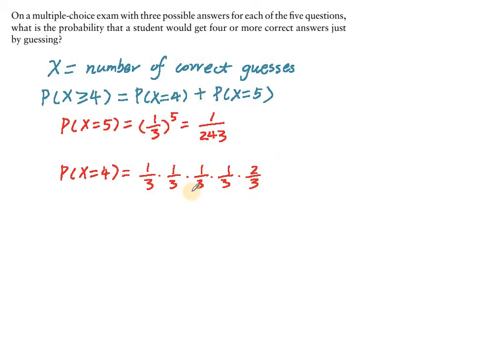However, this just corresponds to one way of getting four correct answers and one wrong answer. There are actually five choose one ways.